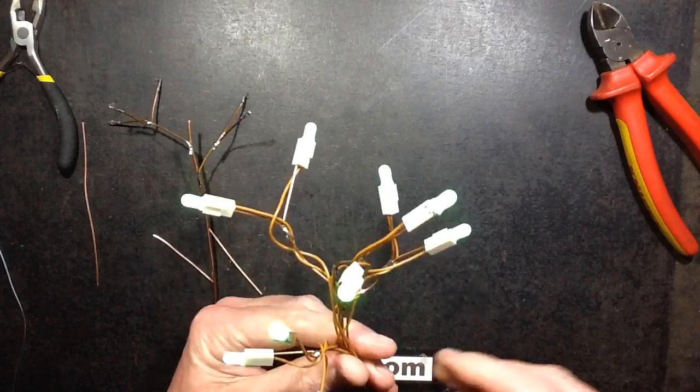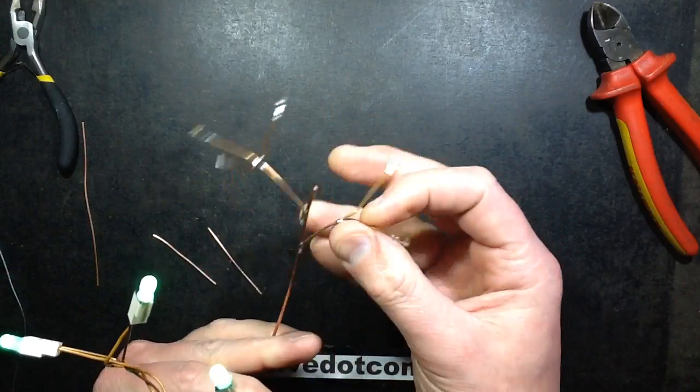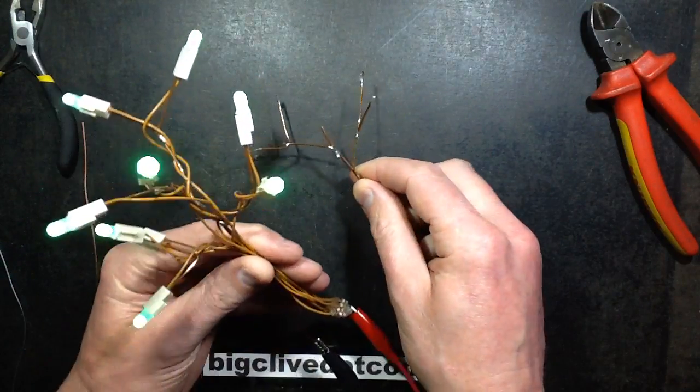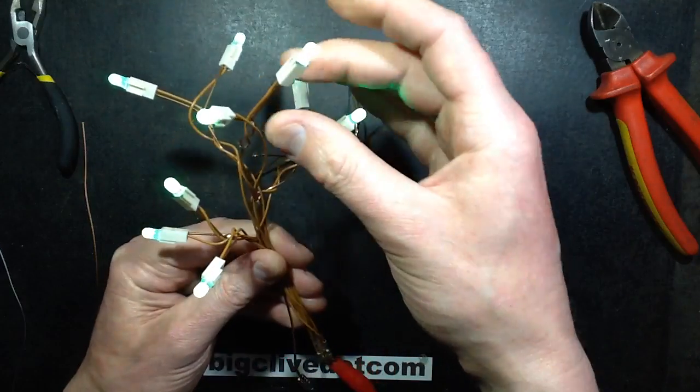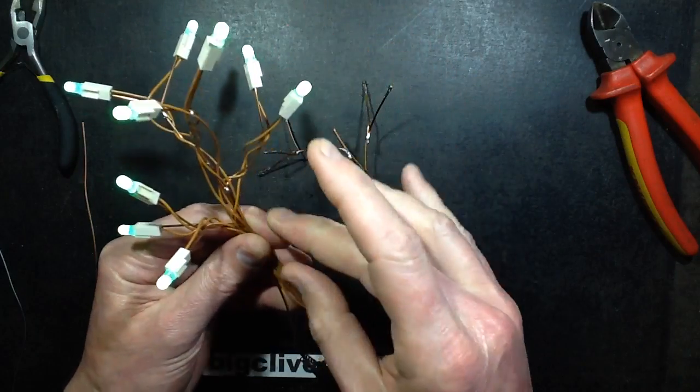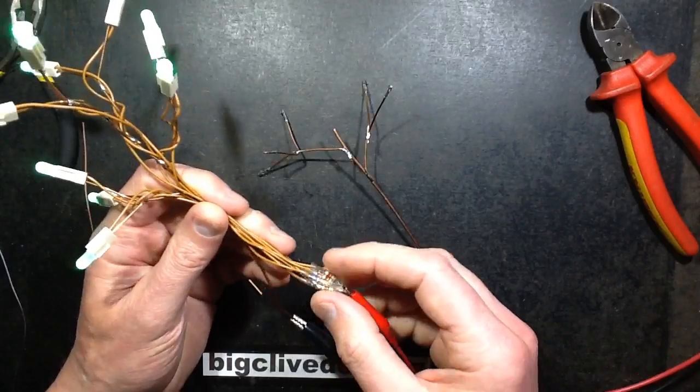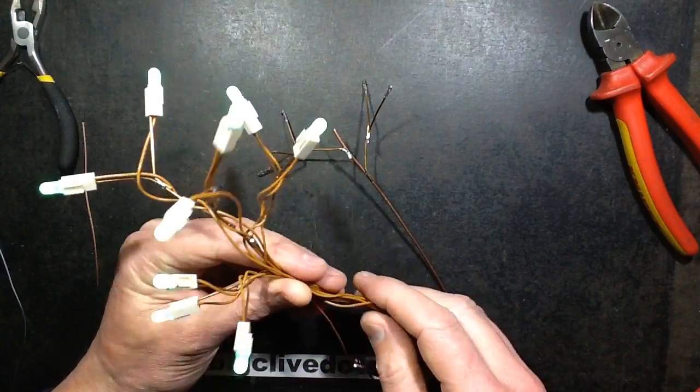The end result uses the copper structure of the tree as the negative, and then each LED has an individual wire coming from it down to the base where there's a 220 ohm resistor. It's running off a 5 volt supply.